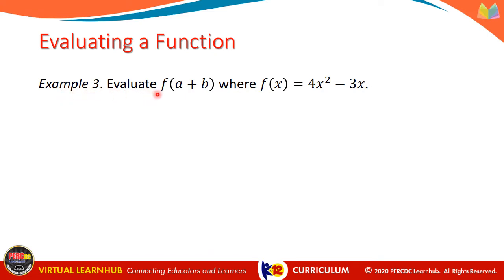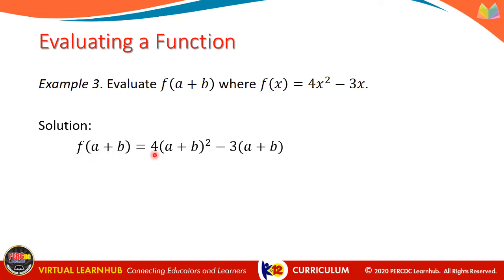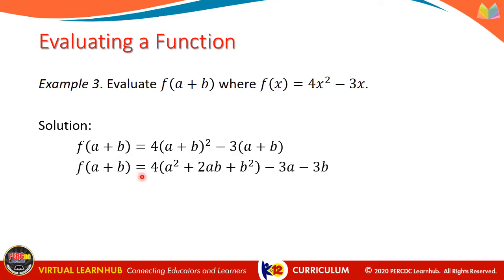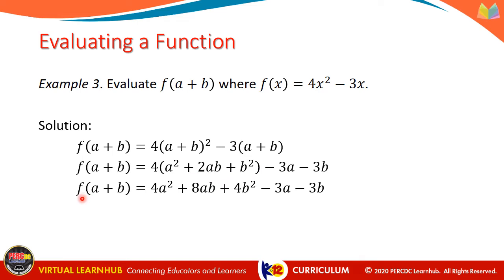Example number 3. Evaluate f of a plus b, where f of x is equal to 4x squared minus 3x. To answer this problem, we just need to substitute a plus b for x, making our solution f of a plus b equal to 4(a plus b) squared minus 3(a plus b). Expanding (a plus b) squared and distributing negative 3 to the quantity a plus b: f of a plus b equals 4 times (a squared plus 2ab plus b squared) minus 3a minus 3b. Distributing 4 gives f of a plus b equals 4a squared plus 8ab plus 4b squared minus 3a minus 3b.